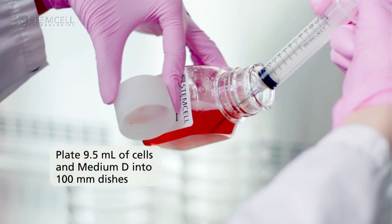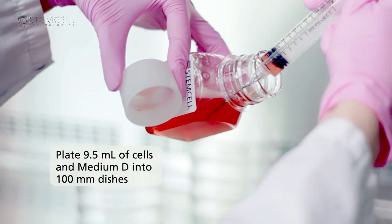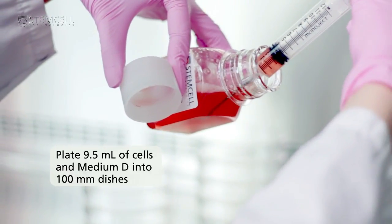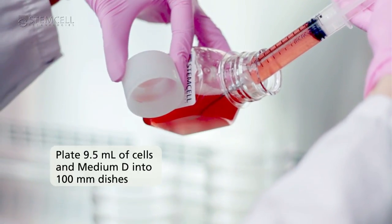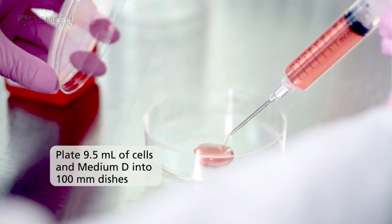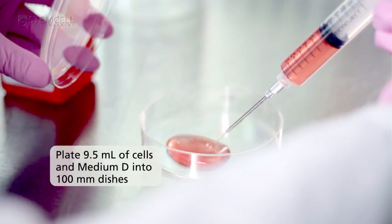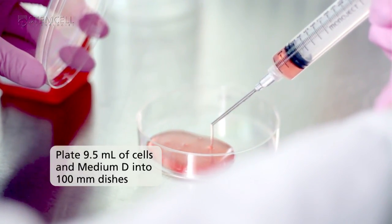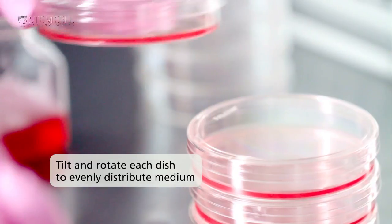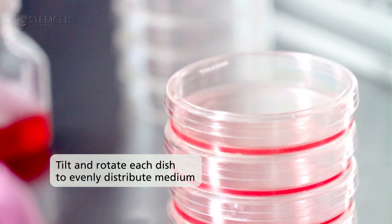Aseptically plate 9.5 mils of cells and medium D into 100 millimetre dishes. We recommend the use of a syringe and blunt end needle. Do not use a serological pipette to avoid medium and cell loss due to sticking of the viscous medium to the inside of the pipette. Tilt and rotate each dish to ensure that medium is evenly distributed.